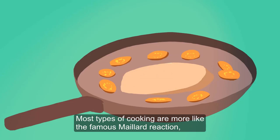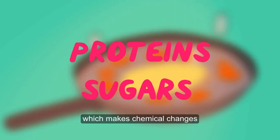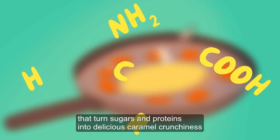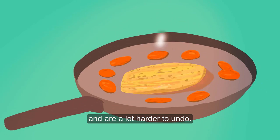because even though it changes the way proteins are shaped and bound together, it doesn't actually change their chemical identity. Most types of cooking are more like the famous Maillard reaction, which makes chemical changes that turn sugars and proteins into delicious caramel crunchiness, and are a lot harder to undo.